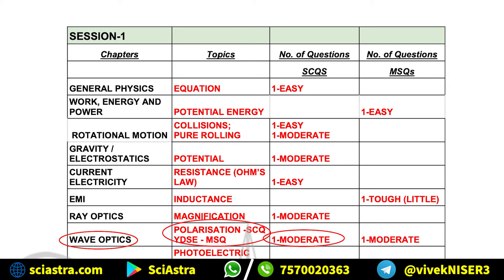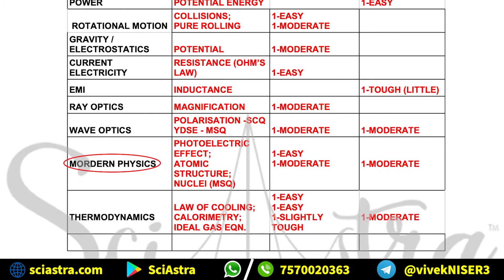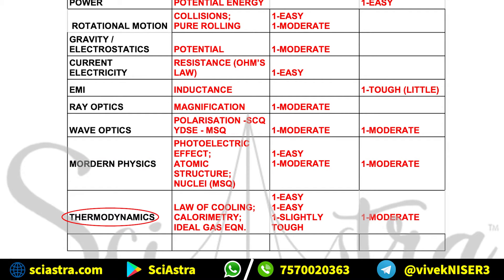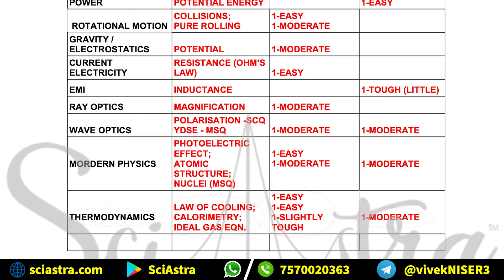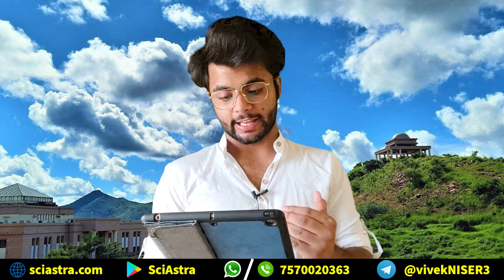One multiple-select question came from YDSE, both at moderate level. Then in Modern Physics, questions came on photoelectric effect, atomic structure, and nuclei — one easy single-choice, one moderate single-choice, and one moderate multiple-select question. In Thermodynamics, questions on law of cooling, calorimetry, and ideal gas equation came — easy, easy, and slightly tough — and one moderate MSQ came as well.